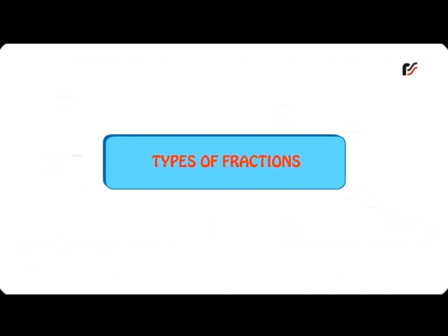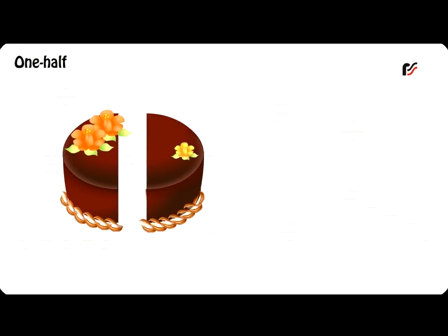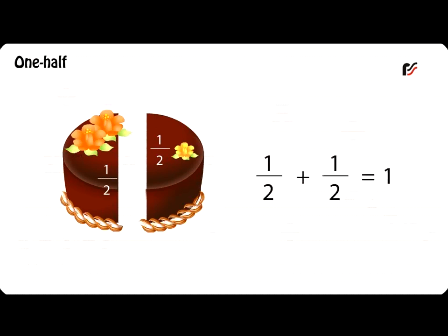Types of Fractions. One Half: When a whole thing is divided into two equal parts, each part is called one half. Half is a fraction and it is written as one by two. And one by two plus one by two is equal to one whole.